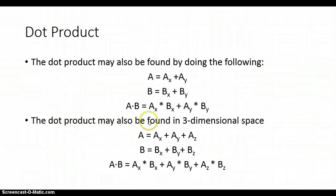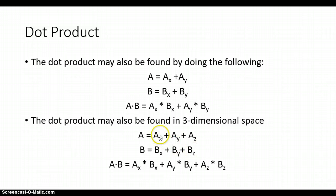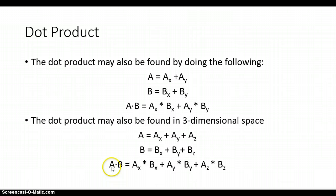If we're in a three-dimensional space, vector a has an x component, y component, and z component, and vector b has an x component, y component, and z component. We multiply the two x components together, multiply the two y components together, and multiply the two z components together, then sum each of those product terms to get the dot product of a and b in three-dimensional space. That's the dot product.